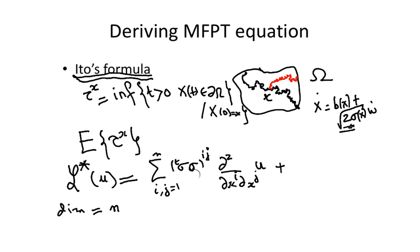Plus the drift part, which is bi du/dxi, for i going from the component from 1 to n.